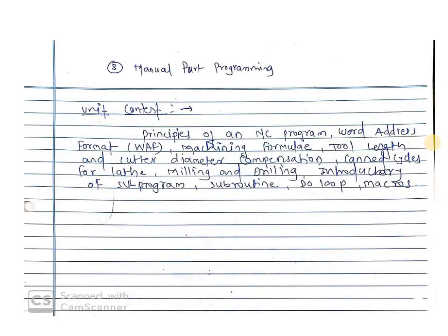You can see what are the unit contents. First part is the principles of an NC program. Next, word address format, that is the WAF — it is required for programming and is the most important part. Next, machining formulas: some formulas are there for calculating the speed and other parameters. Next, tool length and cutter diameter compensation — using G code and M code, we are going to create some programming and solve problems related to tool length and cutter diameter compensation.